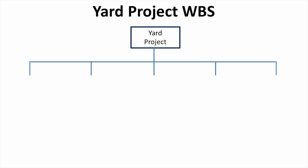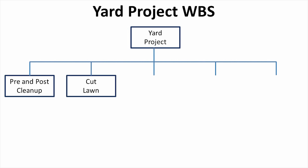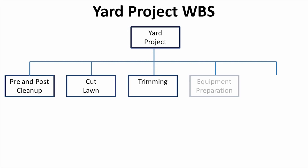Here on the screen you can see my work breakdown structure for my yard project. The tasks involved are pre and post cleanup, cutting the lawn, doing the trim work, getting the equipment prepared, and hedge trimming. Notice I didn't put these tasks in any kind of order — I just listed the tasks that need to be done, because sequencing is not the function of the work breakdown structure.